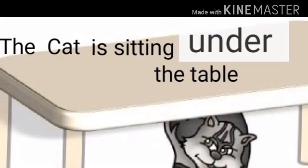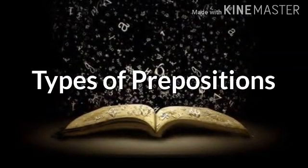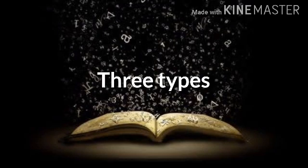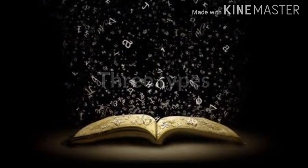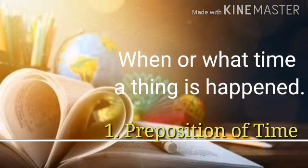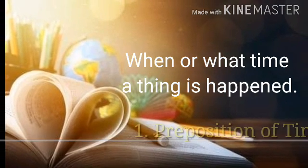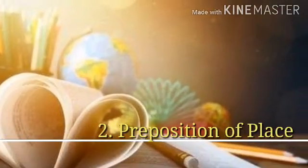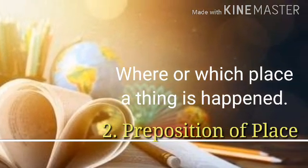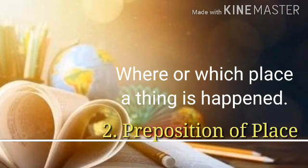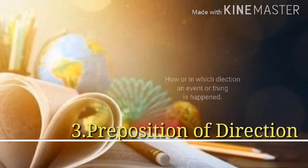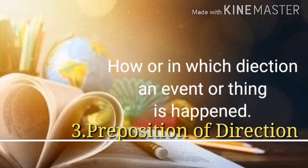Now we can look at the types of prepositions. Basically there are three types based on their situations. First, preposition of time — which indicates when or at what time a thing happened. Second, preposition of place — where or in which place a thing happened. Third, preposition of direction — how or in which direction an event or thing happened.